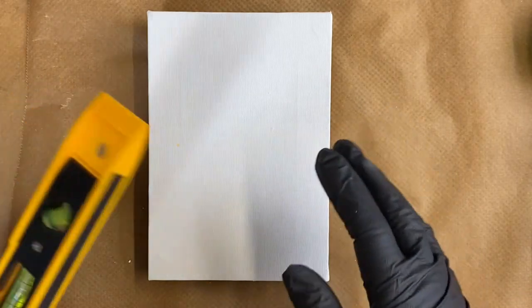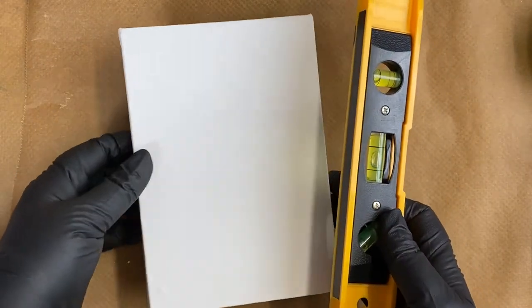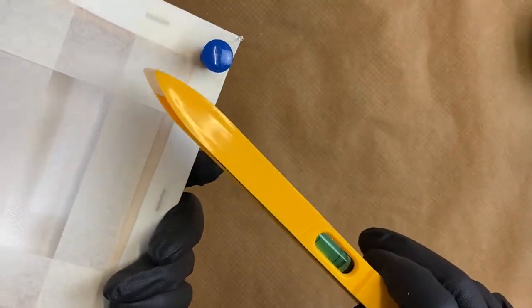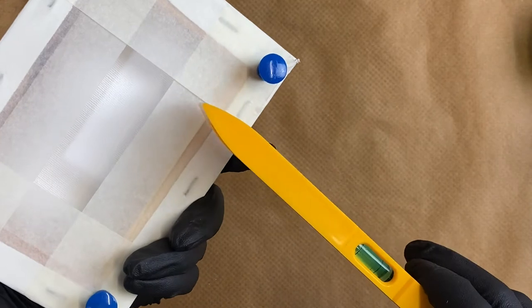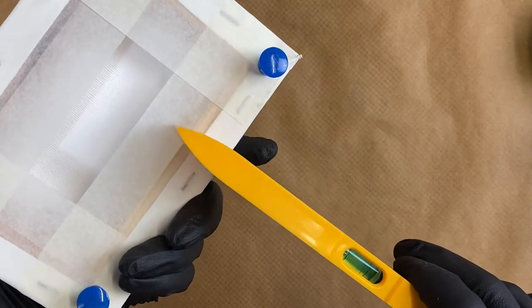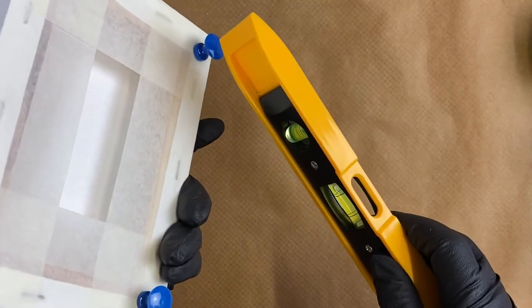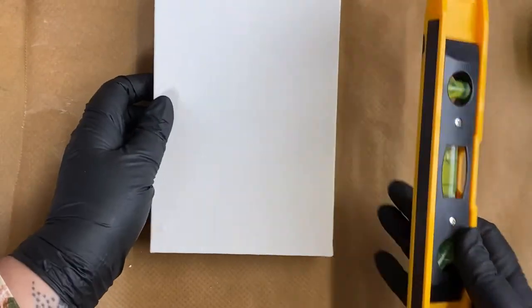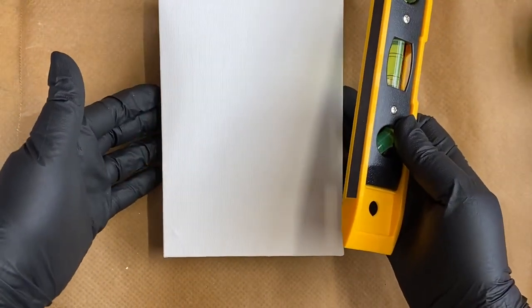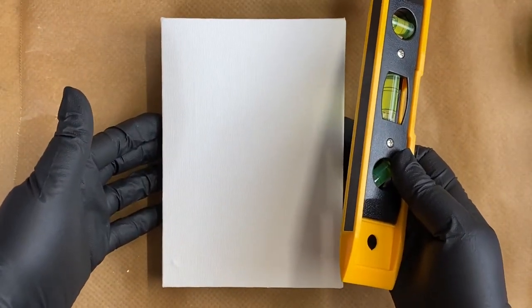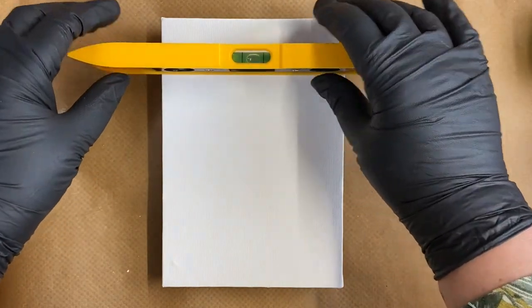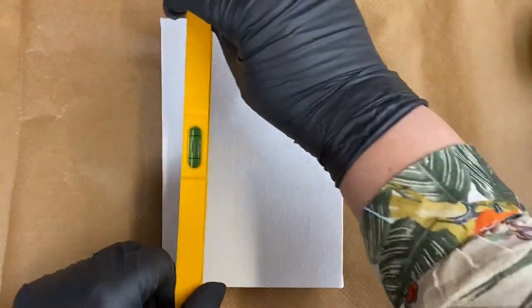So you don't need a lot of equipment for this. All I've done is I've got my little canvas 5 by 7 inch, taped the back to keep it nice and clean and put my little push pins in just to keep it off the surface so it makes it easier to handle. And I've leveled it all up using my little spirit level.